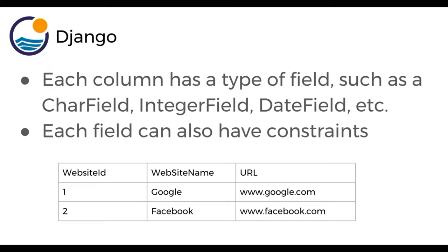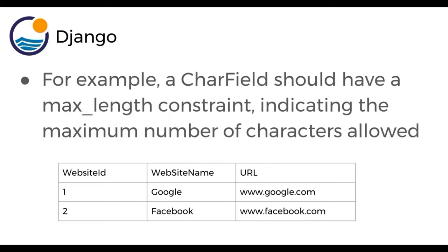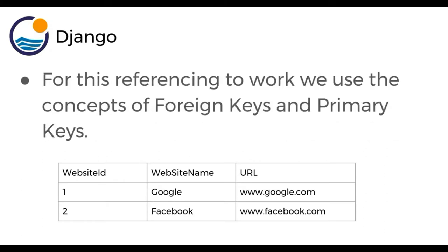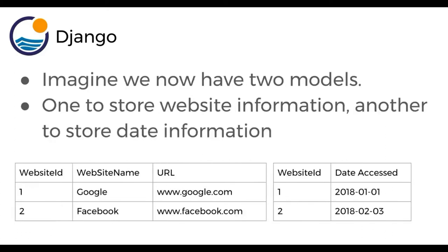For those kinds of constraints, for example, the character field should have a max length constraint, indicating the maximum number of characters allowed. So you have the type of field and then constraints on that field. The last thing to note is table or models with Django and the relationships between them — often models will reference each other. For this referencing to work, we use the concepts of foreign keys and primary keys. Imagine we now have two models, essentially two databases — one to store website information and another to store date information.